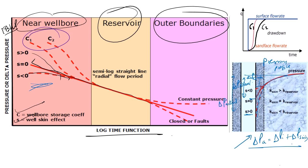For different wellbore storage coefficients, the trend differs: C2 has more wellbore storage time than C1, meaning C2 distorts the early-time data for longer. In the mid-time region, the representative reservoir response allows identification of effective permeability and transmissibility.